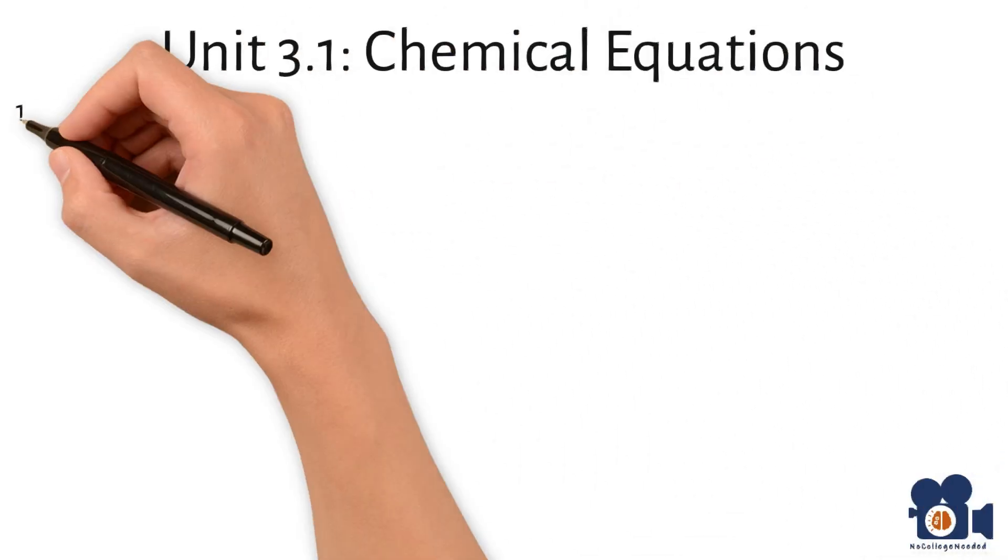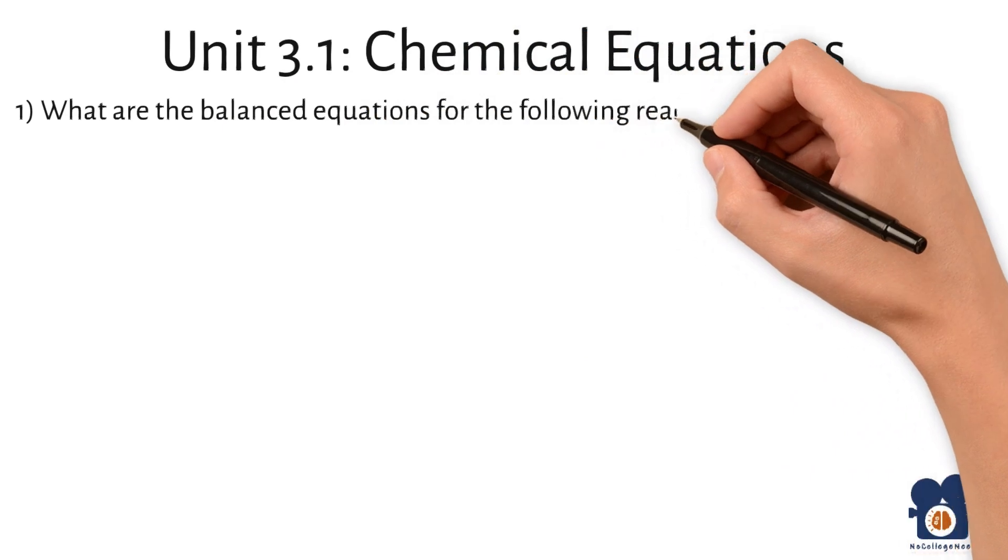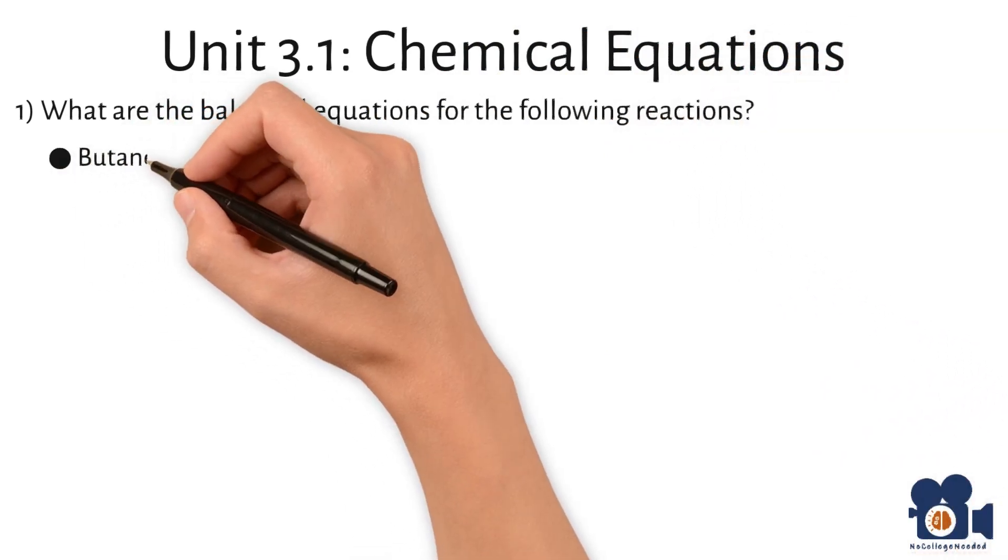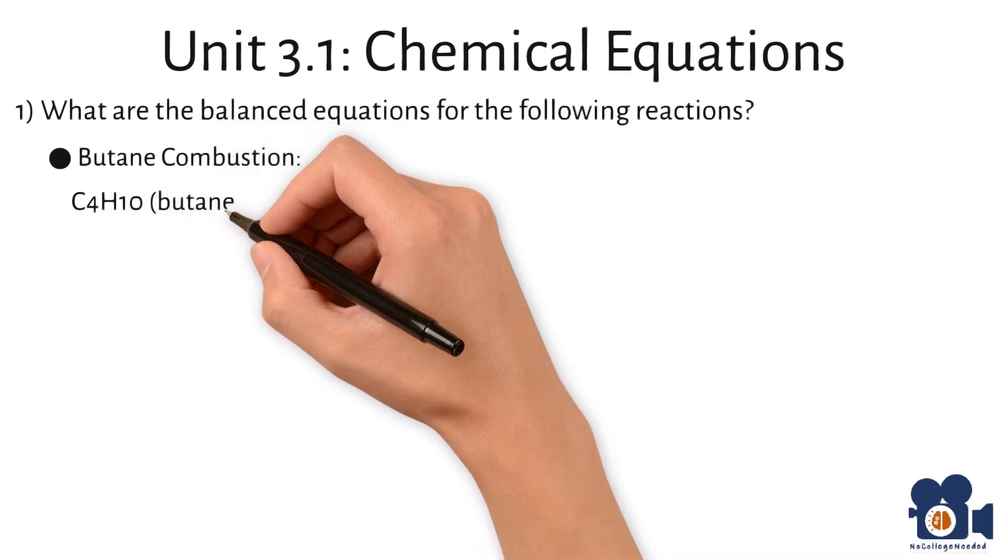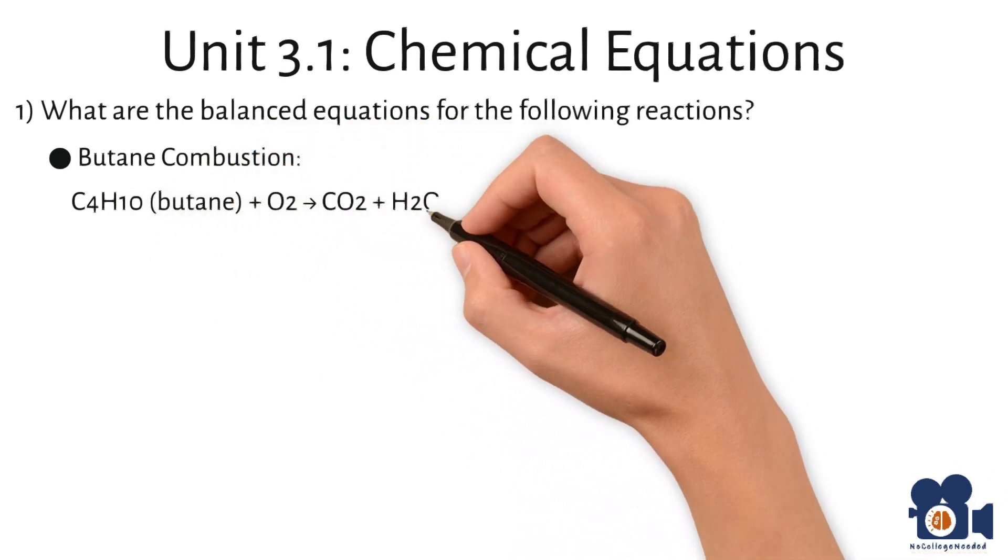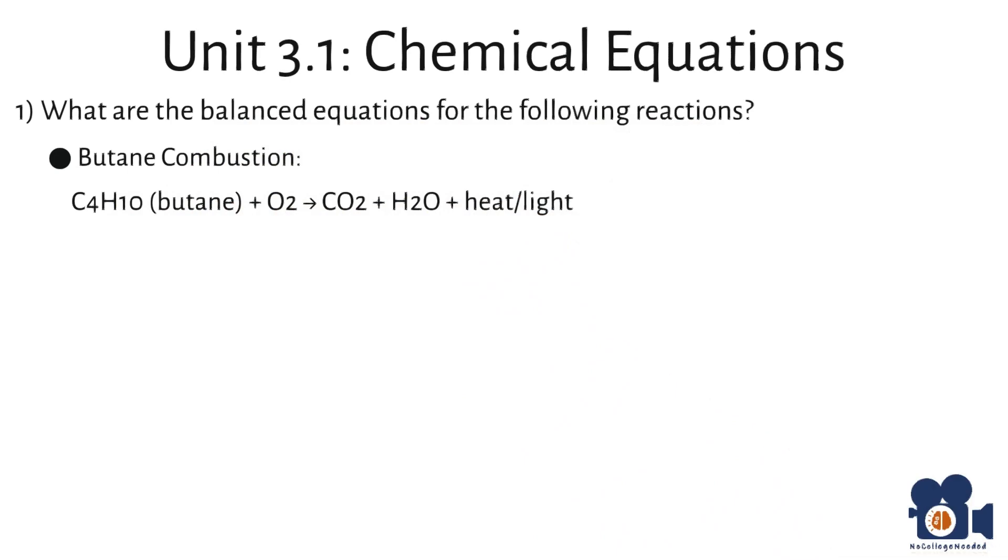Unit 3.1, Chemical Equations. What are the balanced equations for the following reactions? For butane combustion, C4H10 plus O2 going to CO2 plus H2O plus heat and light.